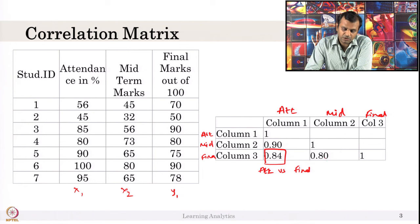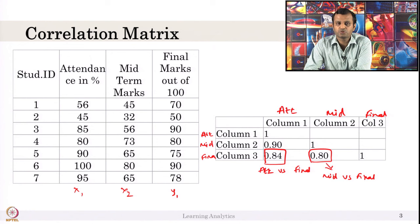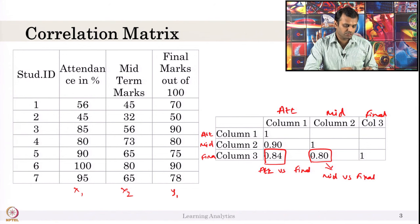Column 3 versus column 2: what is the correlation coefficient of midterm marks versus final marks? It indicates 0.8. It says if the student scores good in midterm exams, they will definitely score good in final exams. So that is the final exam score. This is the correlation matrix which tells you x1 and y1, x2 and y1.